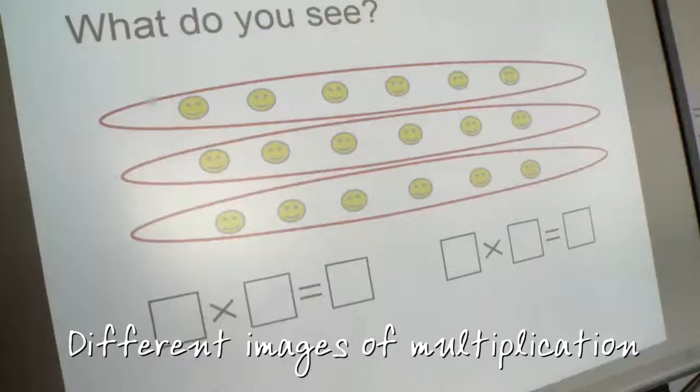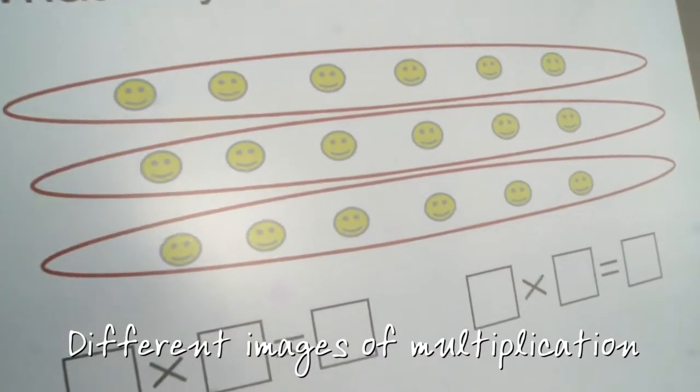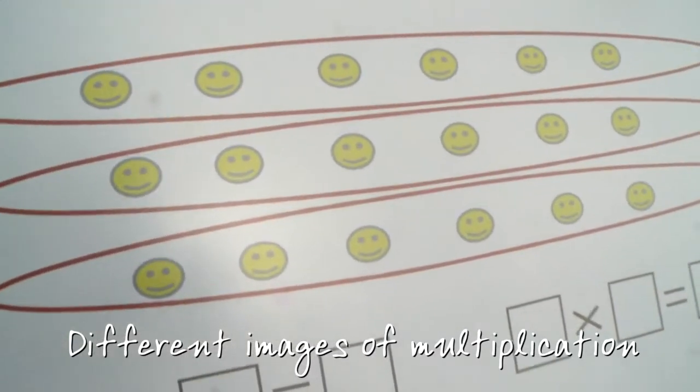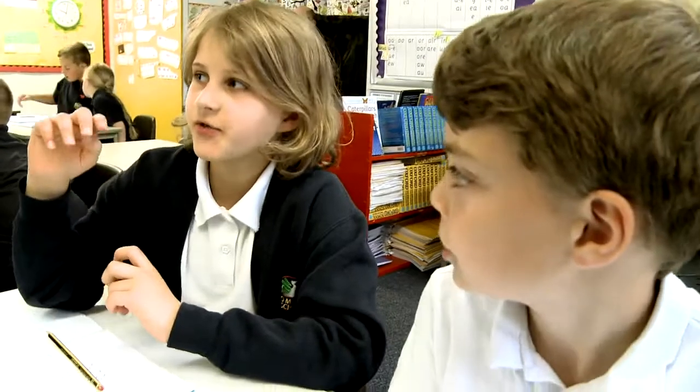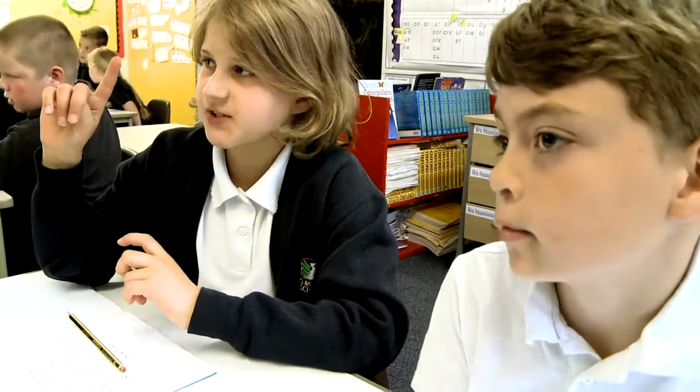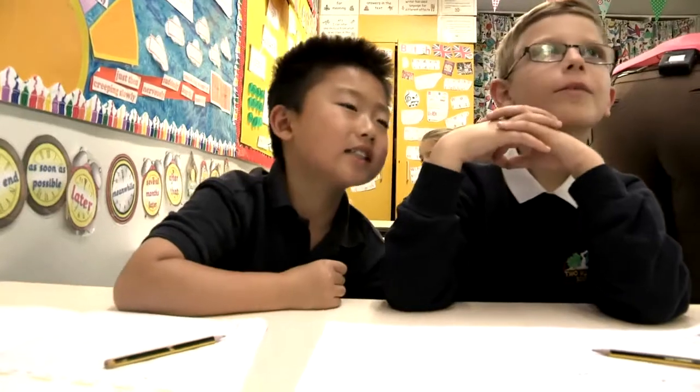Have a look at this image. Talk to your learning partner. What do you see? I see three groups of six minor faces. And I see the same — three groups of six minor faces.